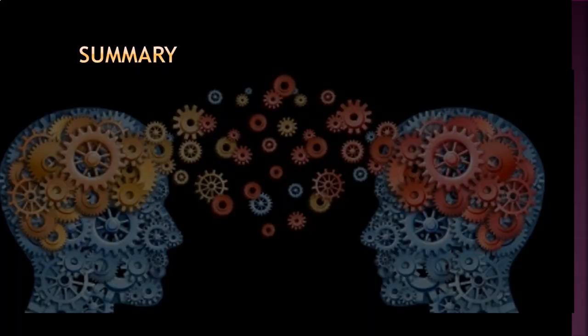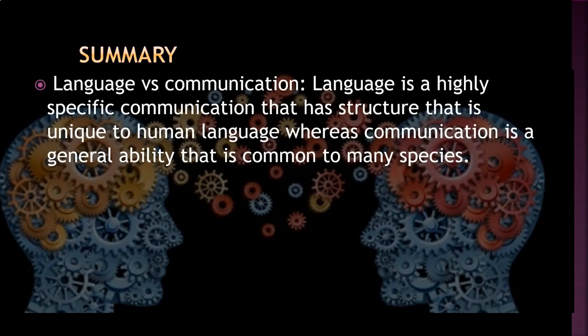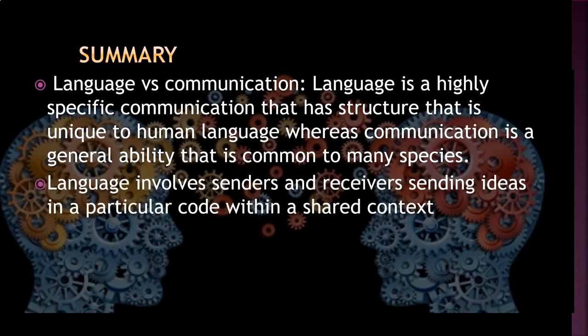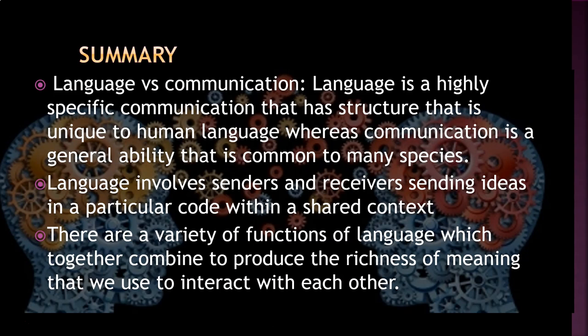To summarize, we have contrasted language and communication. Language is a highly specific communication type that has structure that is unique to human language, whereas communication is a general ability that is common to many species. A model of language shows that language involves senders and receivers sending ideas in a particular code within a shared context. And finally, we looked at a variety of functions of language, which together combine to produce the richness of meaning that we use to interact with each other.